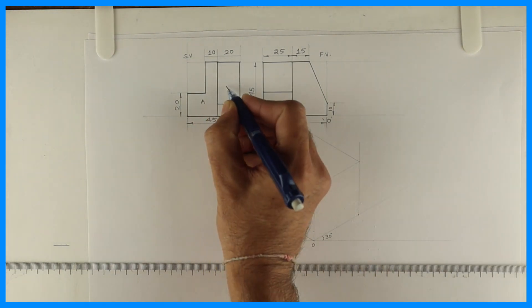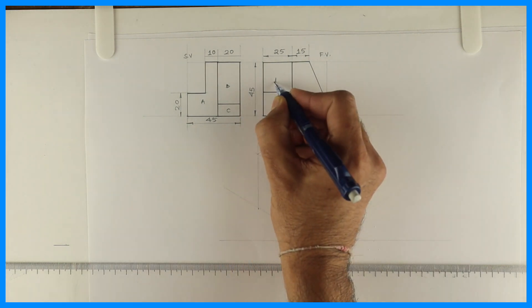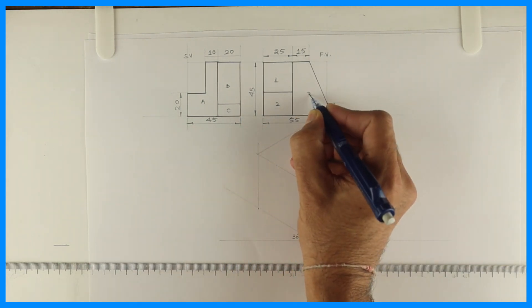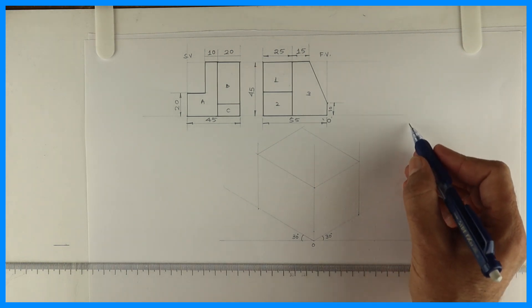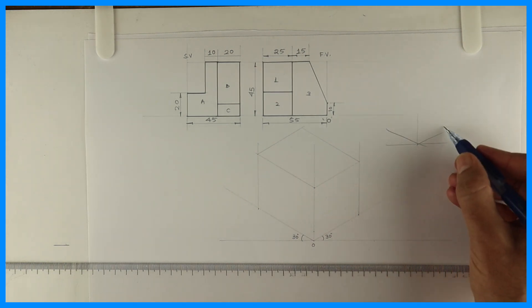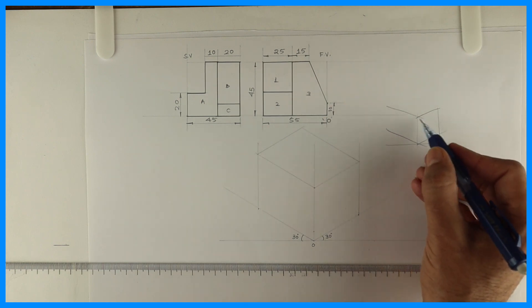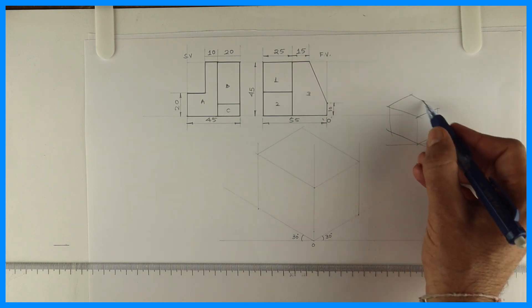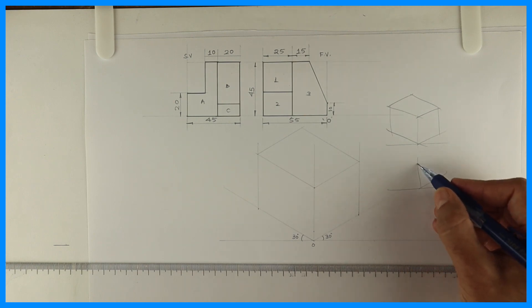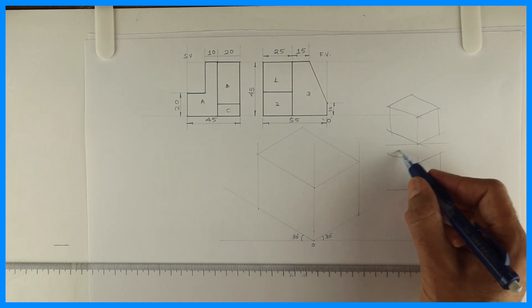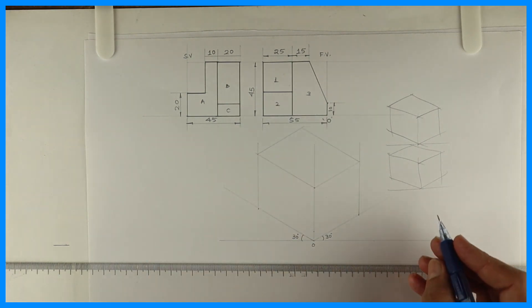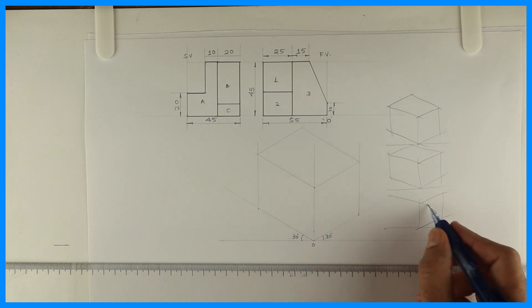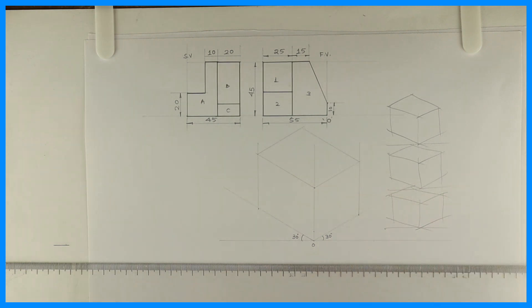Now, if you see in side view, we have A, B and C, three parts. In front view, we have three parts. It's not possible to start with any one surface, so we will see all the possibilities. Because I don't know whether the first one is nearer to me or the second one or the third one. So I will draw three boxes and assume one by one.